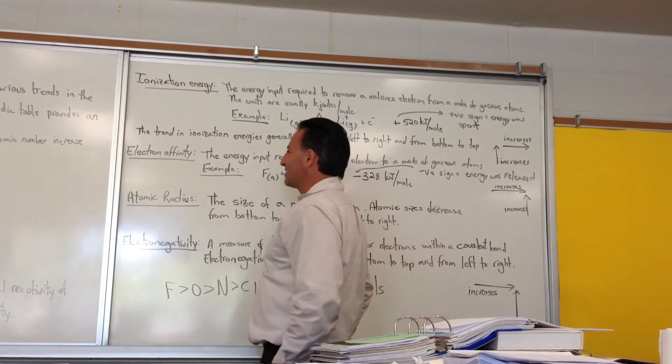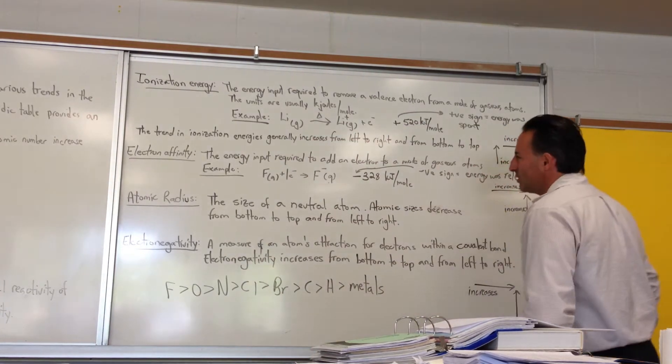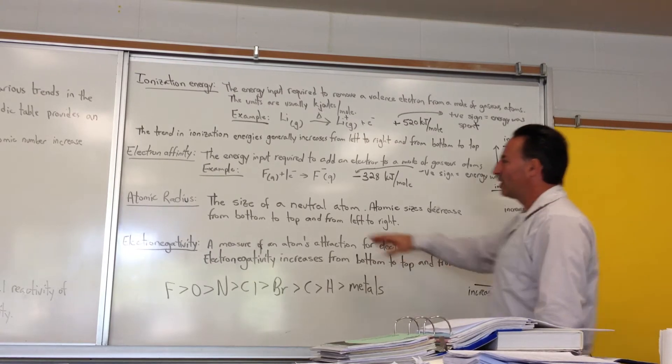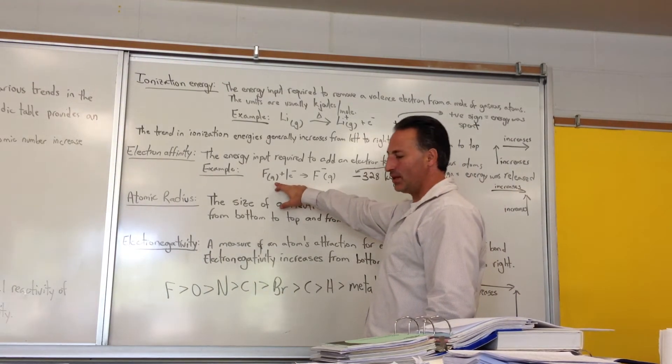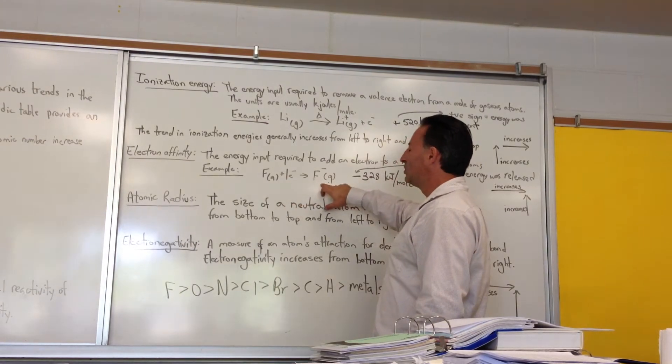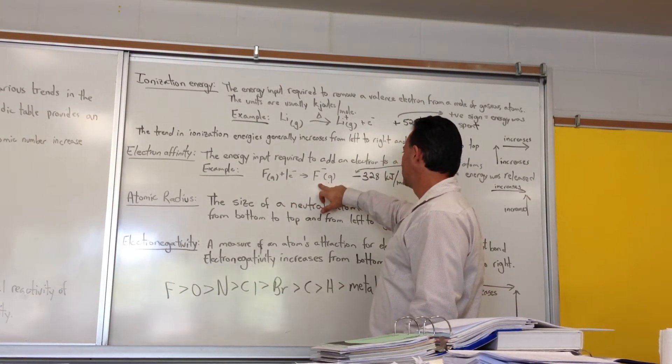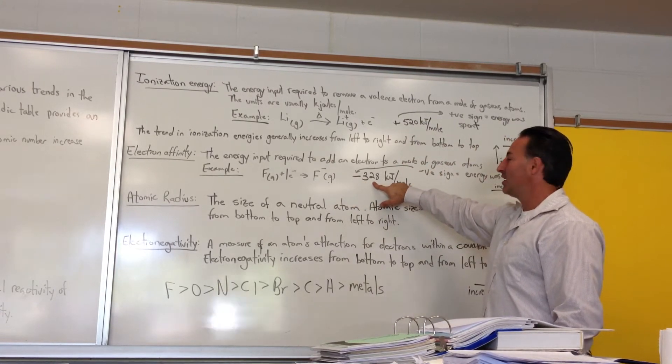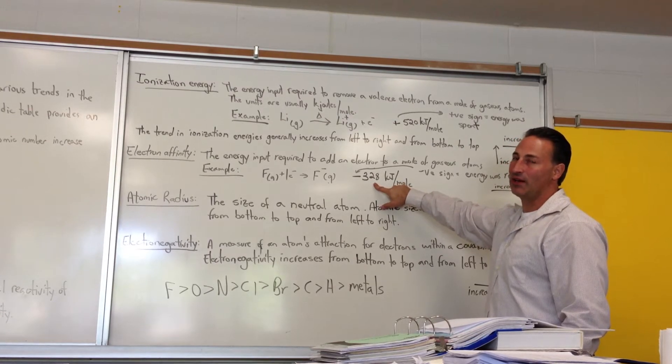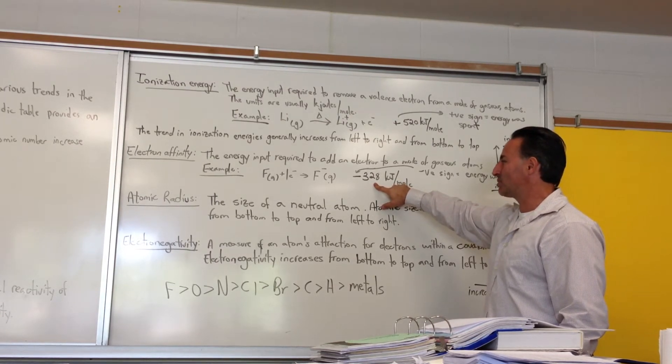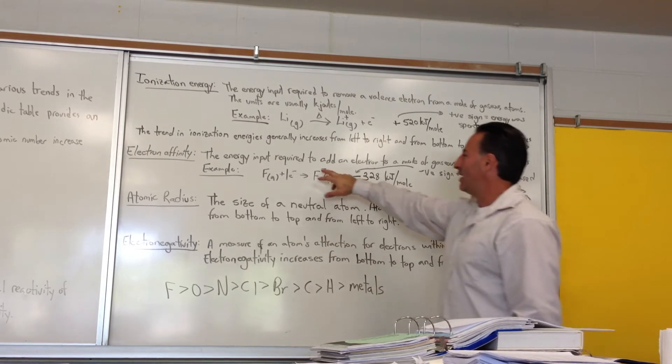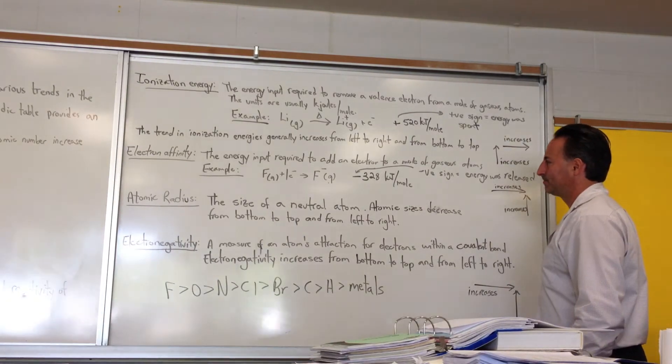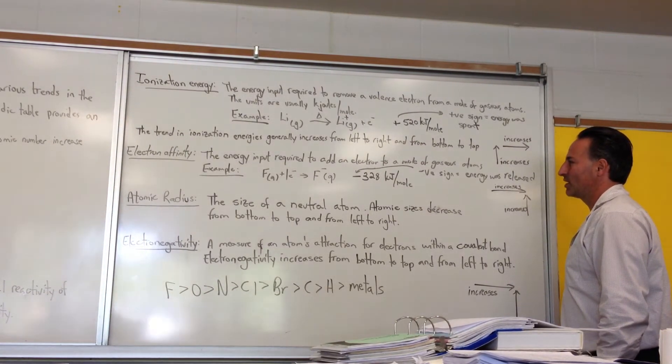The next property we want to look at is electron affinity. And that, by definition, is the energy input required to add an electron to a mole of gaseous atoms. In the case of fluorine gas, a mole of fluorine gas, if you were to add an electron to it, you'd get fluoride ions. But you'll see that it's got a negative electron affinity, meaning that it would actually release energy to get ionized fluorine gas. Because fluorine, in fact, is a non-metal and acquires a noble gas configuration by gaining one electron. So there is an energy release associated with that.